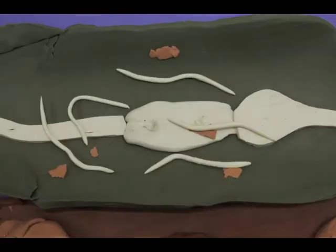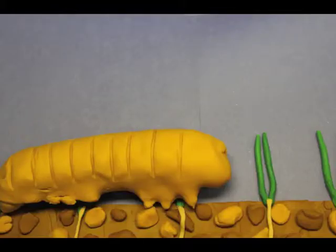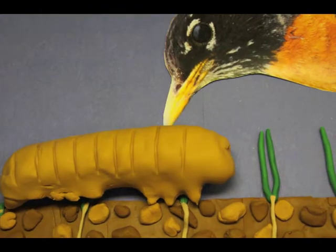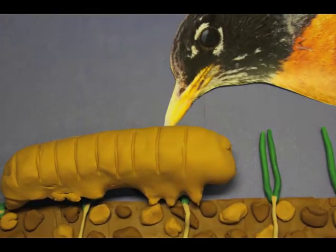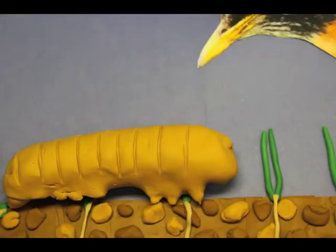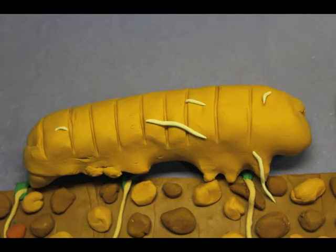The bacteria produce a variety of foul chemicals to help keep scavenging animals like this robin at bay and let the nematodes grow up in peace.